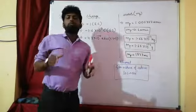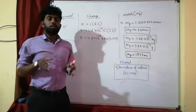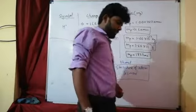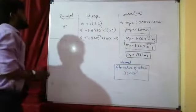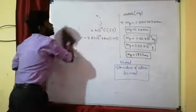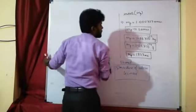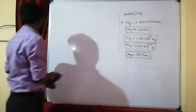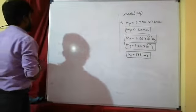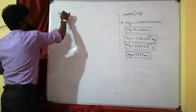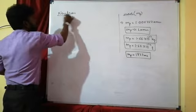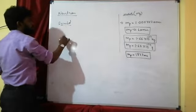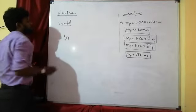In the last video, we completed the proton. Now we are going to study the neutron — the next subatomic particle. The standard symbol of neutron is n₀¹, written as small n. The superscript position is mass and the subscript position is charge.